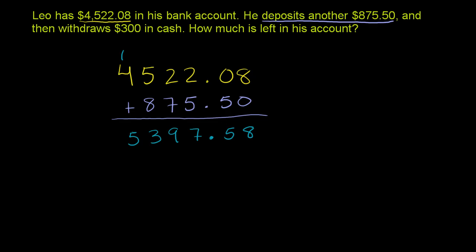Then he withdraws $300 in cash, or he takes out $300. So we'll have to subtract that. So then he withdraws $300.00. And I just added some trailing zeros after the decimal. $300.00 is the same thing as $300 and 0 cents. And then we subtract.